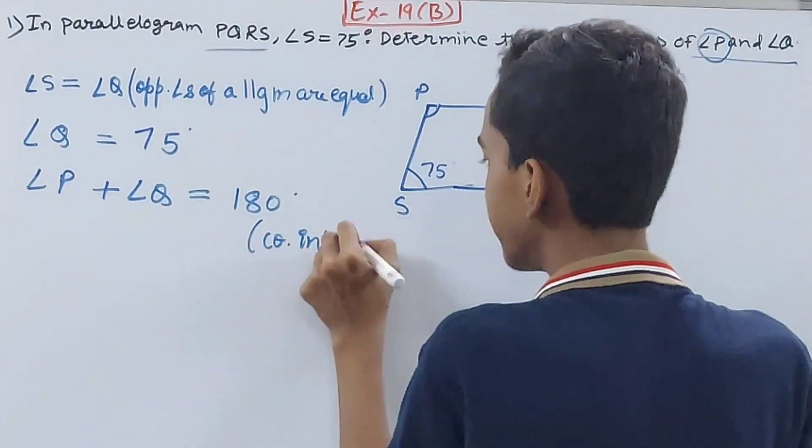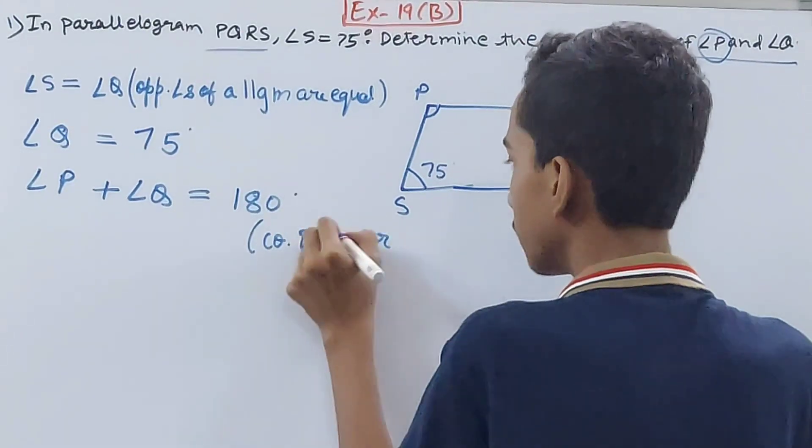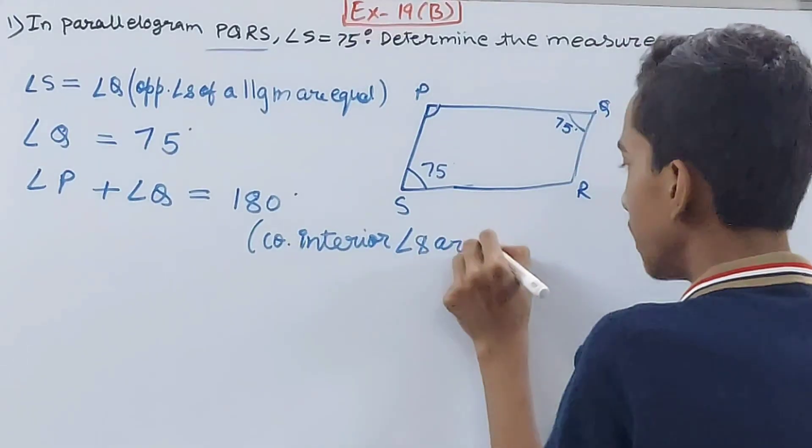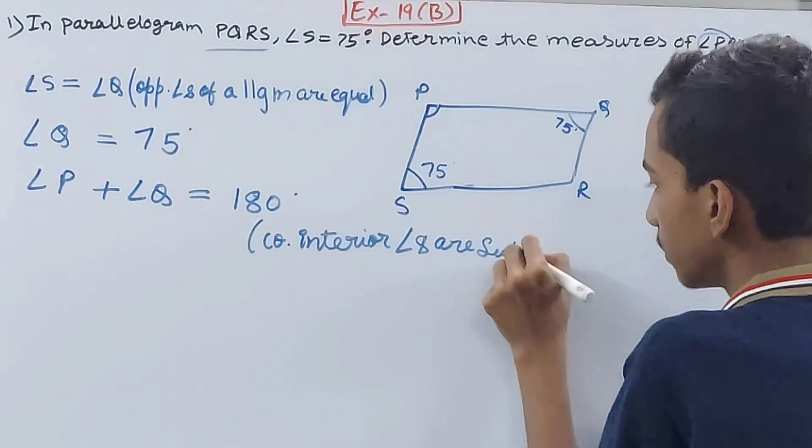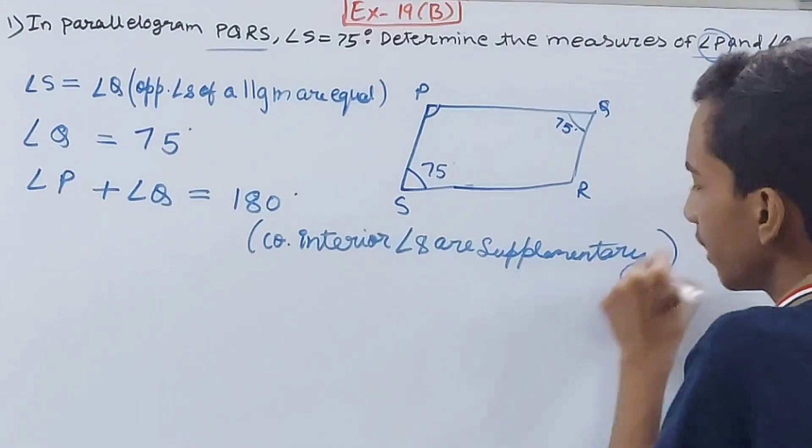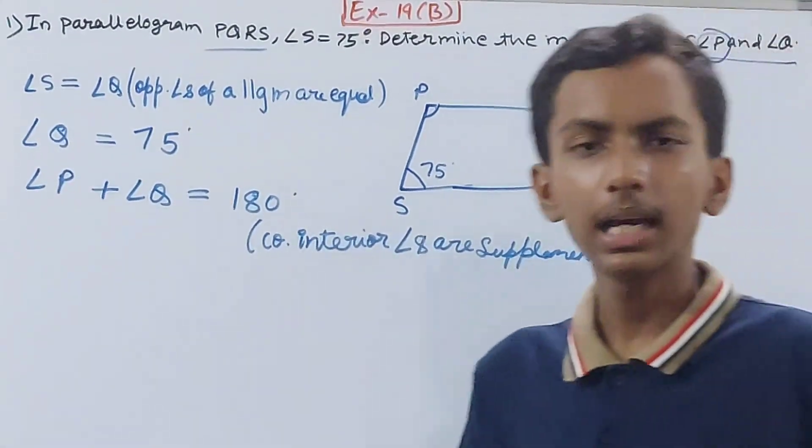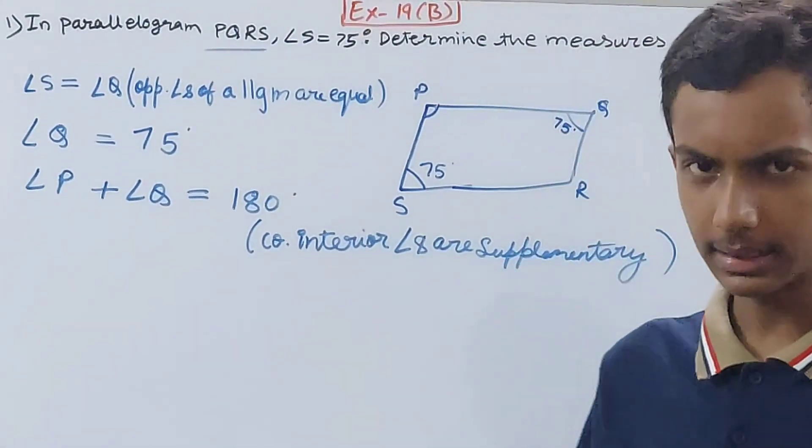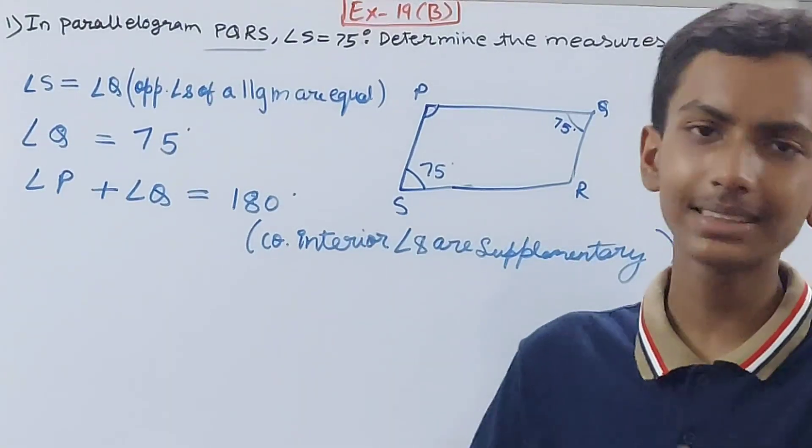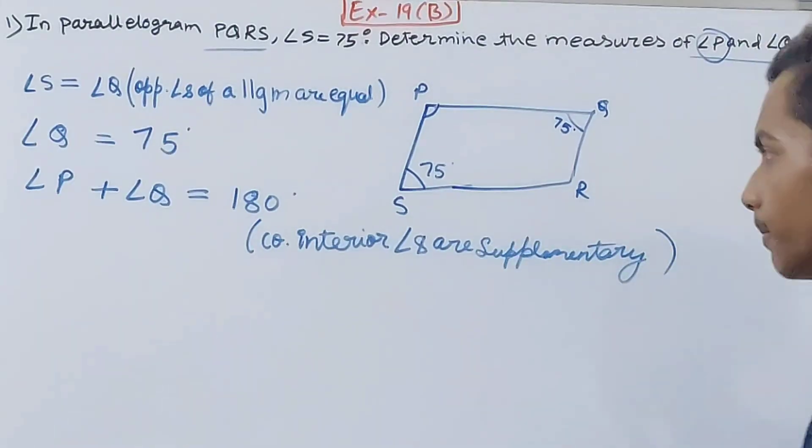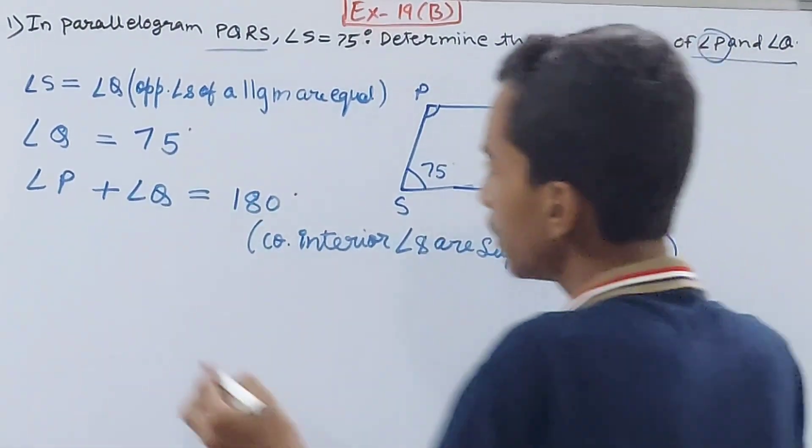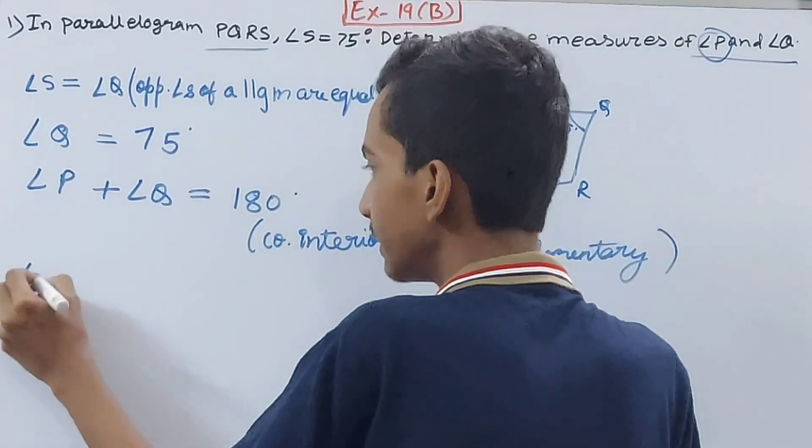Co-interior angles are supplementary. This is the property we studied in Class 7 in the chapter about lines and angles. They are 180 degrees. Now let's put the value. We know angle Q is 75.